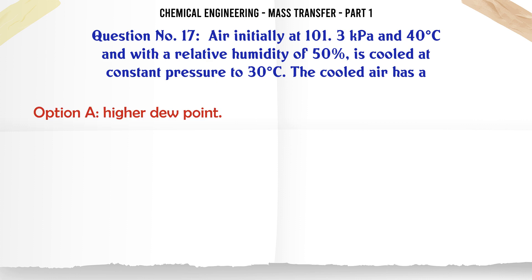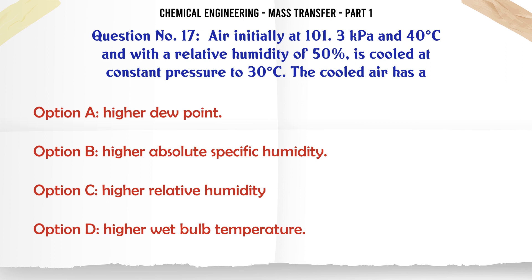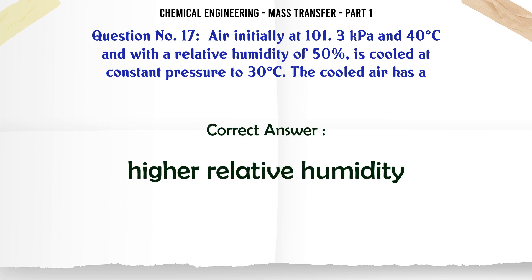Air initially at 101.3 kPa and 40 degrees Celsius and with a relative humidity of 50% is cooled at constant pressure to 30 degrees Celsius. The cooled air has a: A. Higher dew point. B. Higher absolute specific humidity. C. Higher relative humidity. D. Higher wet bulb temperature. The correct answer is Higher relative humidity.